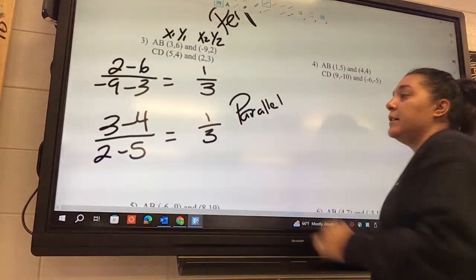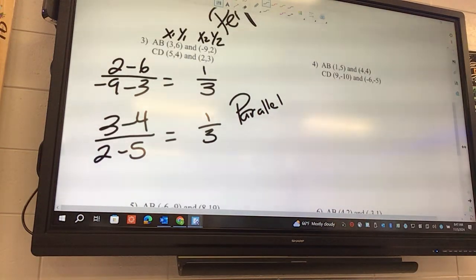They're exactly the same. Okay, what if one is 1 third and the other is negative 1 third? That is neither. Remember, so perp you got to flip and change. So 1 third and 1 third is the same, it never got flipped.